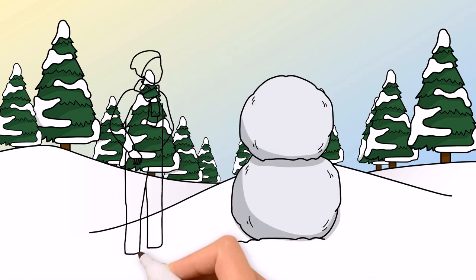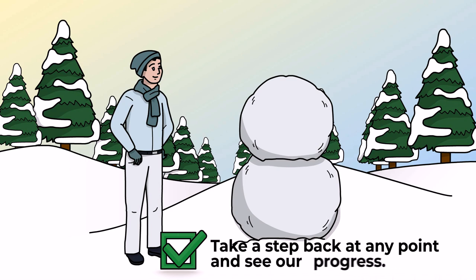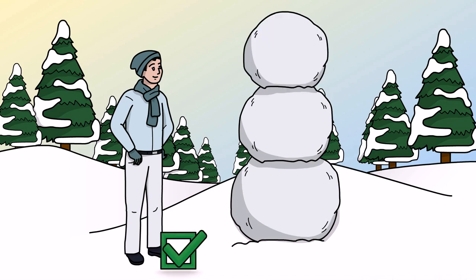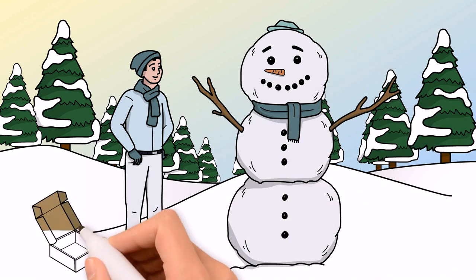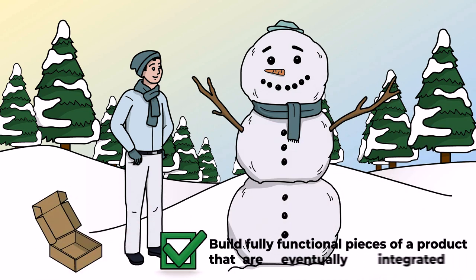In an iterative and incremental process, we can take a step back at any point and see our progress. An iterative process is a repeatable process. An incremental process is one where you build fully functional pieces of a product that are eventually integrated together.